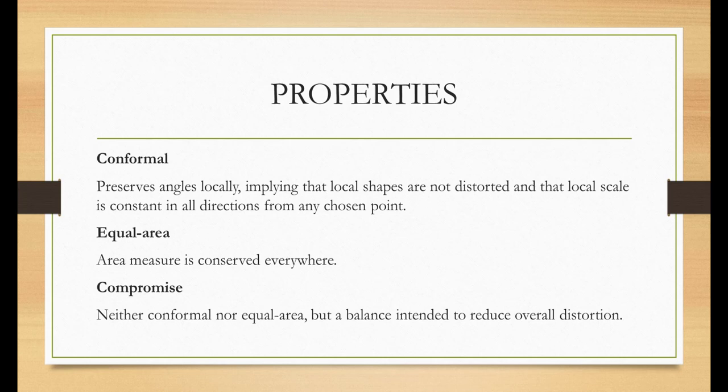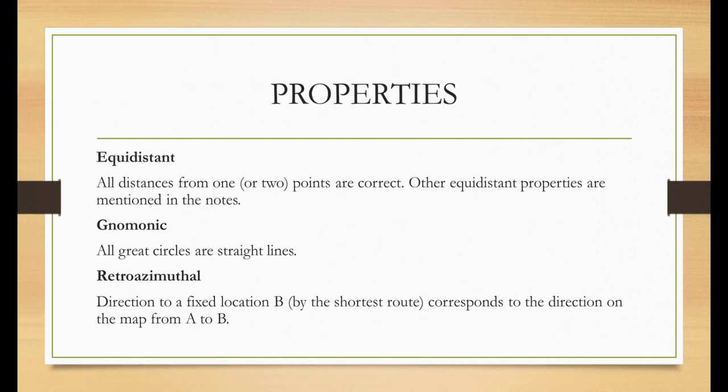Compromise projections are neither conformal nor equal area, but a balance intended to reduce overall distortion. In equidistant projections, all distances from one or two points are correct. In gnomonic projections, all great circles are straight lines. Then we have rhumb line projections, where direction to a fixed location B by the shortest route corresponds to the direction on the map from A to B.